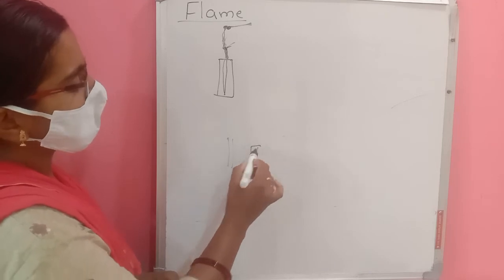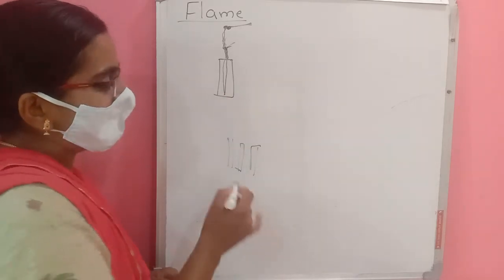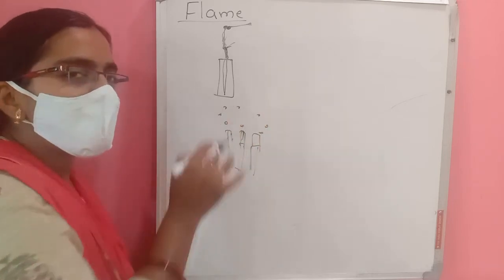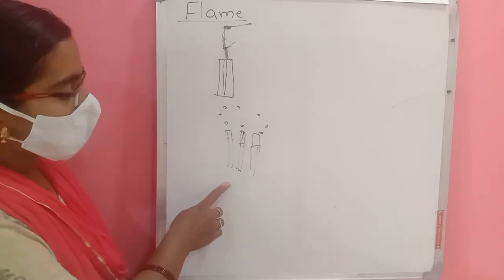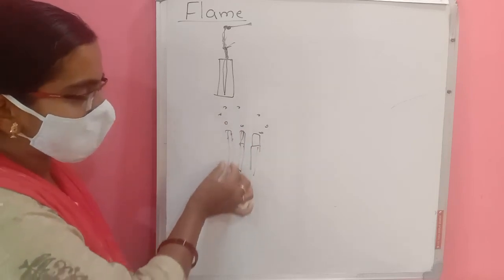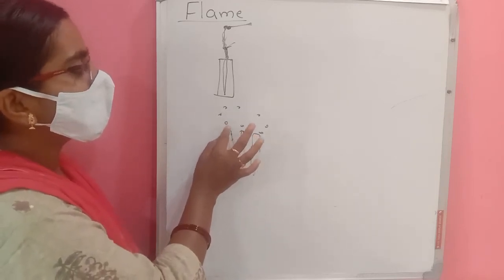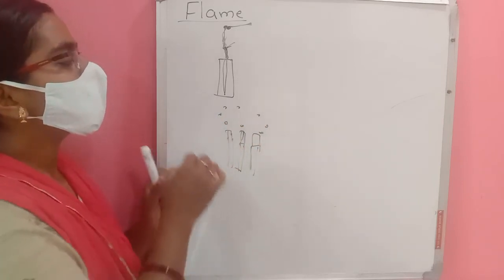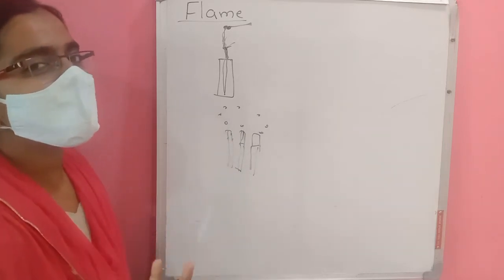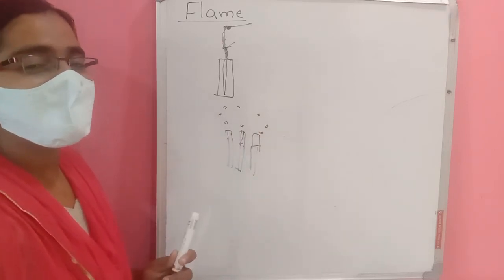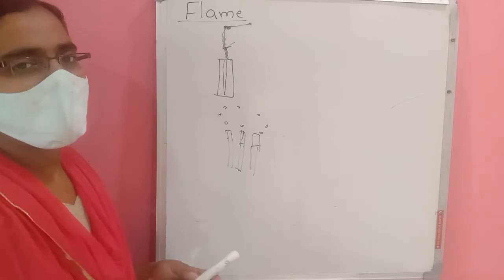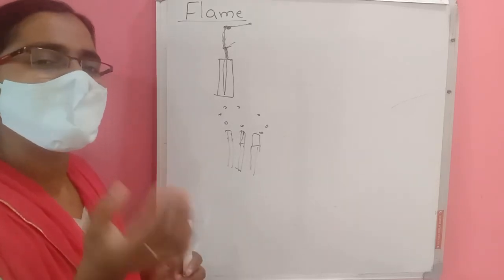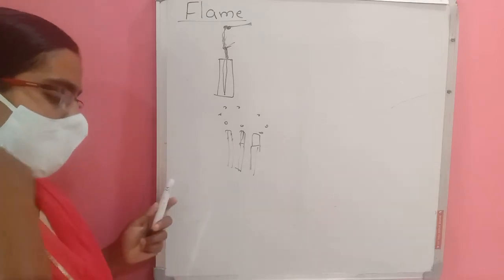In a kerosene stove, wicks are dipped in kerosene and have holes. The kerosene spreads through the wick, passes through the holes, and evaporates into gas. When it converts into gas, a lighter immediately ignites it to give a flame. Similarly, an LPG stove has holes through which the gas flows — give a small flame and it immediately produces a flame because LPG is already in gas form.